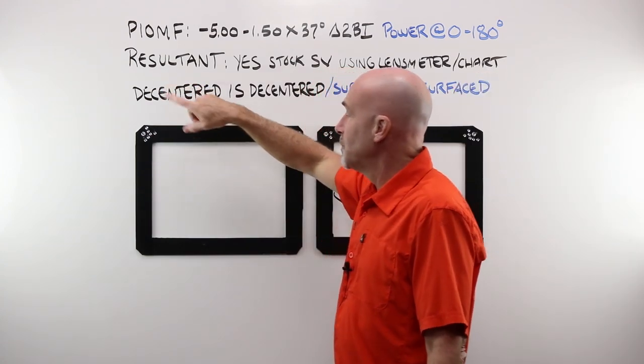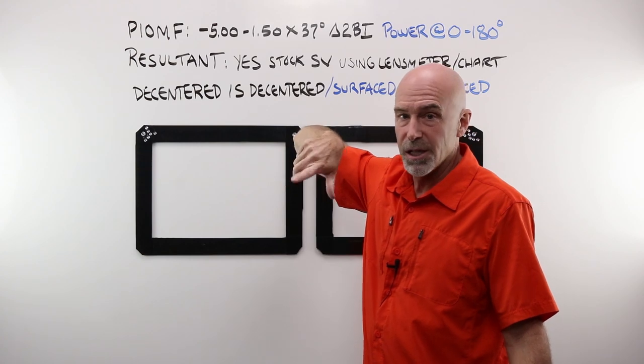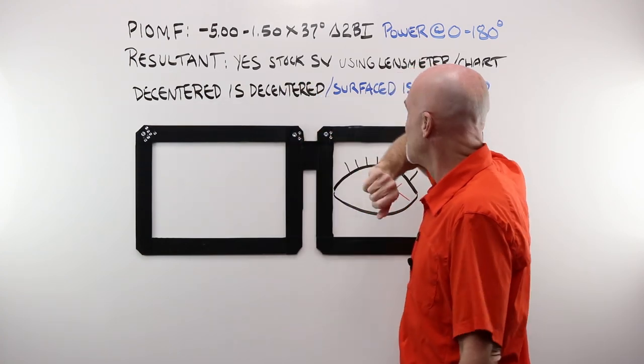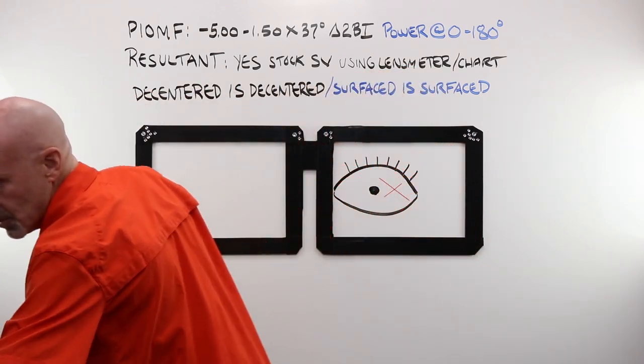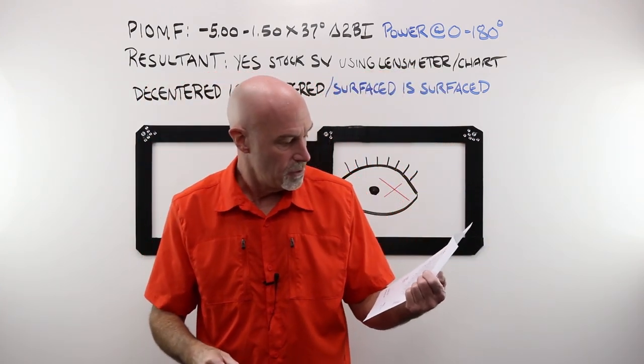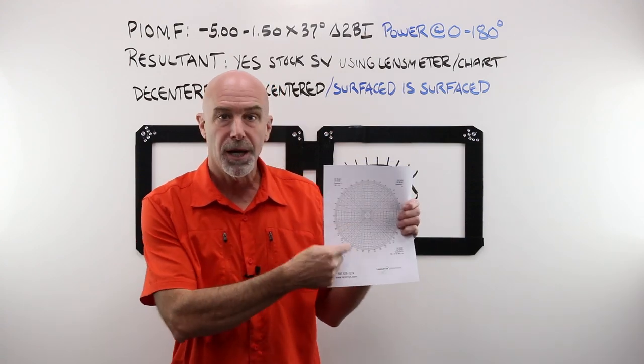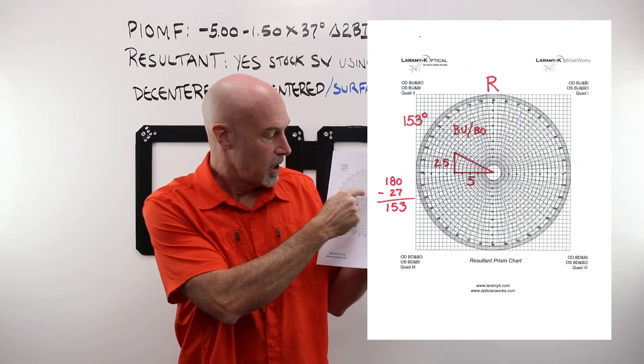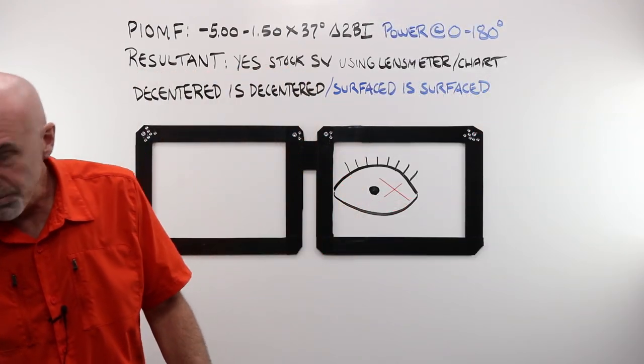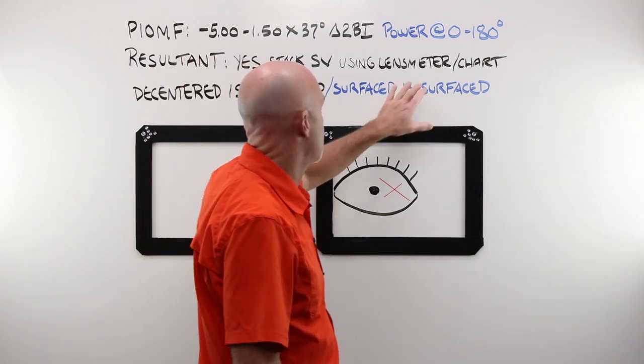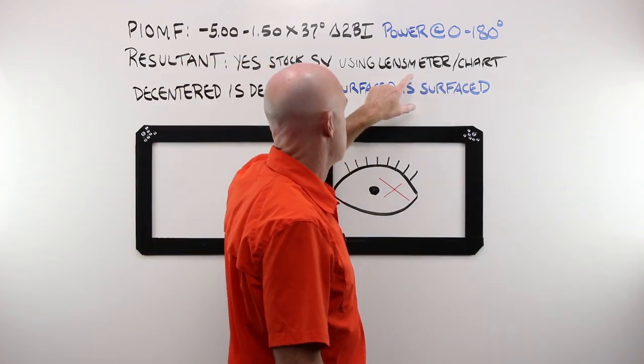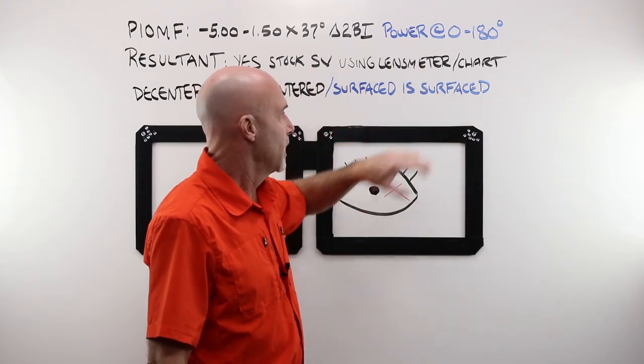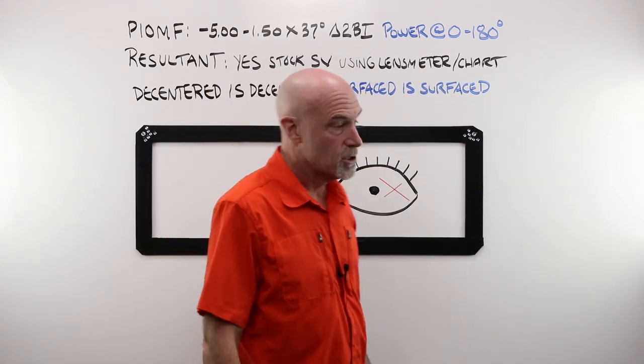You can do resultant prism using a single vision uncut lens. Not easy, but you can do it. You would use your, most likely, I think, especially if you were trying for this for the first time, I would plot it on the chart, come up with where that target is going to be using this, then perhaps move over to the lens meter, use the chart, use the lens meter, dot that up when your target is in the right place, and then stick your block on and run that job.